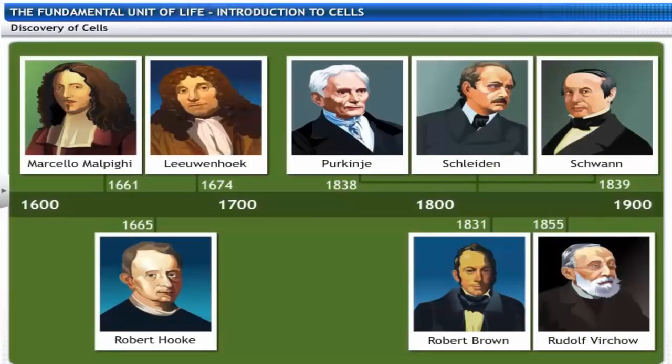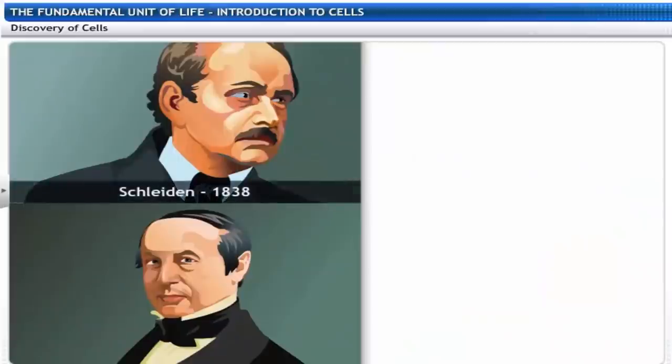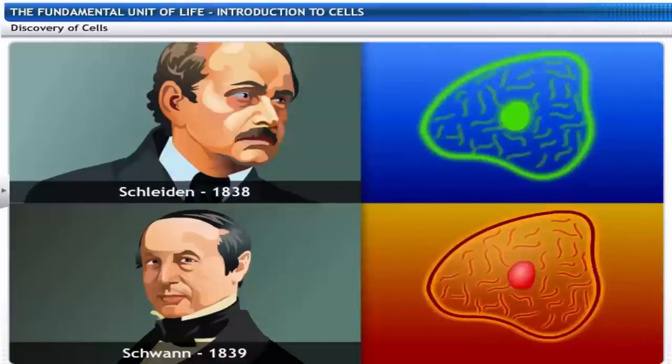Two biologists, Schleiden, in 1838, and Schwann, in 1839, proposed the cell theory that all plants and animals are composed of cells.